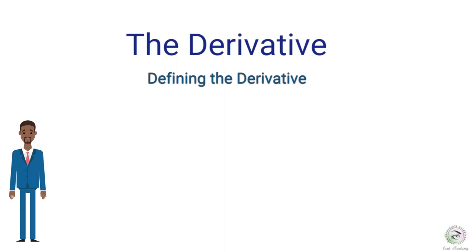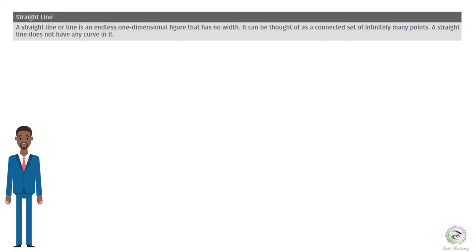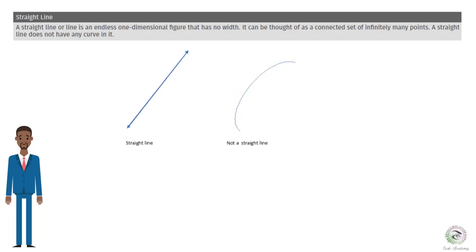The derivative extends the concept of the slope of a straight line to other functions. Let's begin by revisiting the slope. A straight line is an endless one-dimensional figure that has no width. It can be thought of as a connected set of infinitely many points. A straight line does not have any curve in it.